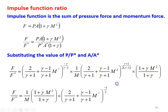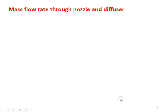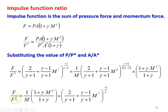The first two terms can be combined. F/F* equals (1/M) × (1 + γM²)/(1 + γ) × [2/(γ+1) + (γ−1)/(γ+1) × M²] with the combined power being −1/2. This is the F/F* value, the ratio of impulse function. This value is directly available in the gas tables, but to understand the concept we are deriving the equation.